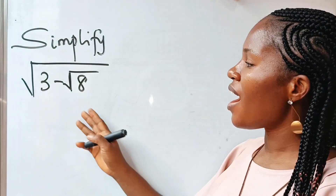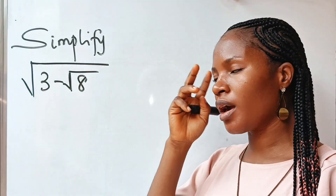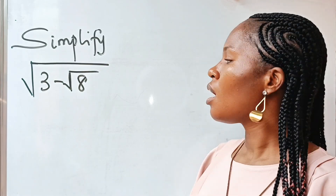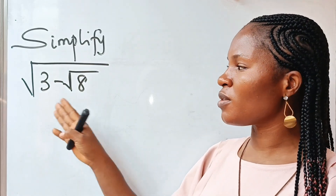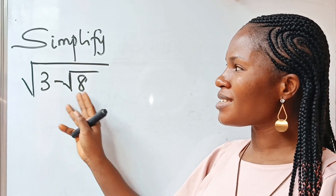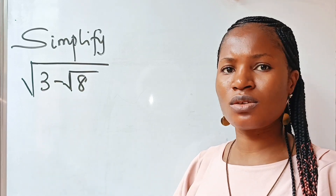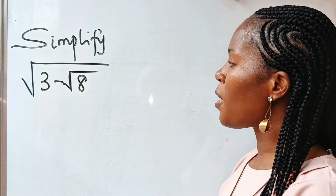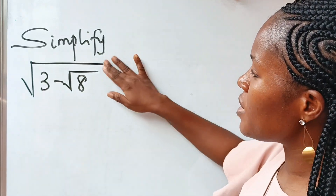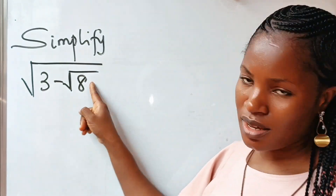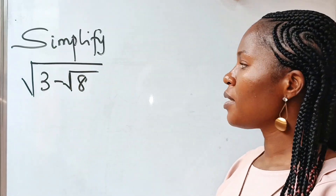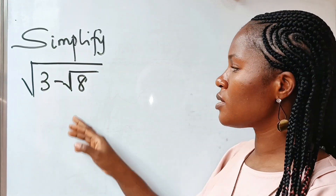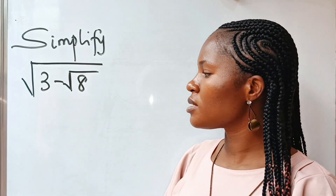Hello amazing friends, we are asked to simplify this — and this is not as simple as you think. So many persons felt this because when you look at it, it looks as if it's already simplified, but it is not. Welcome back to my channel. The first thing we need to do is to simplify root eight, since three is already in its simplest form, there is nothing we can do about it.